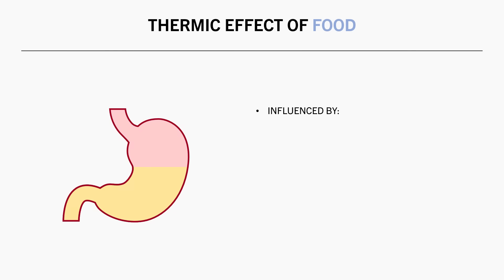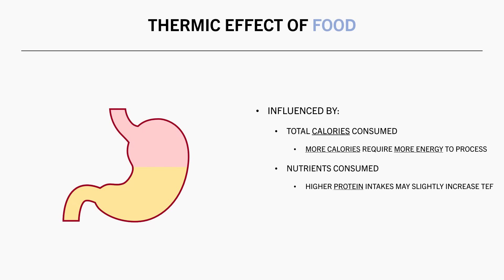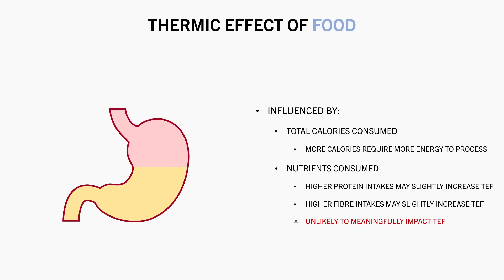However, certain factors can influence energy expended from the thermic effect of feeding to a small degree. First is the total amount of calories consumed — consuming more total calories requires more energy to digest and transport the food, boosting energy burned slightly. Second is the macronutrient composition of our diet: higher protein and carbohydrate diets typically result in a slightly higher thermic effect compared with higher fat diets, and higher fiber intakes also seem to require more energy to process.